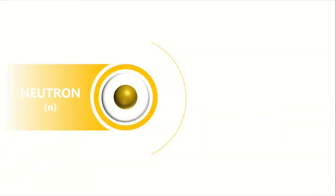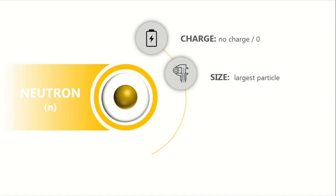The last particle is the neutron, with the symbol N. Neutron does not have any charge and therefore carries zero charge. It is slightly bigger and heavier than the proton. It has a mass of 1.6750 times 10 to the negative 24 grams.